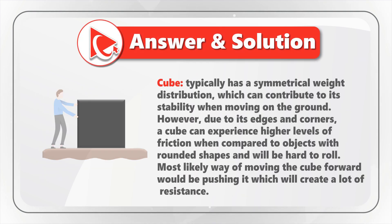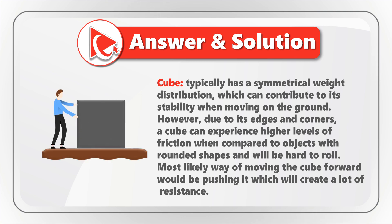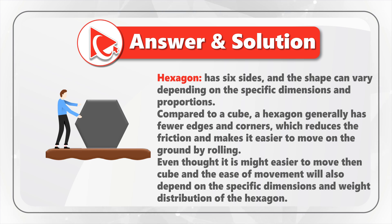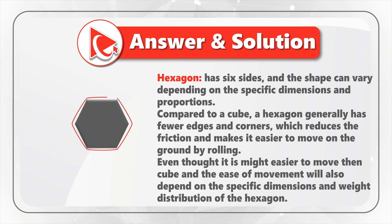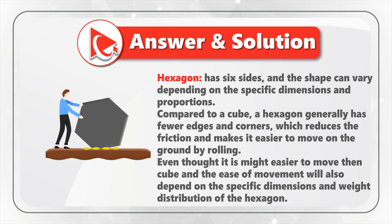Let's start with the cube. A cube typically has a symmetrical weight distribution, which contributes to stability when moving on the ground. However, due to its edges and corners, a cube can experience higher friction compared to objects with rounded shapes and will be hard to roll. The most likely way of moving the cube forward would be pushing it, which creates a lot of resistance. A hexagon has six sides, and compared to a cube, it generally has fewer edges and corners, which reduces friction and makes it easier to move by rolling.